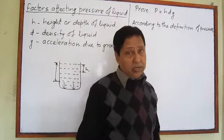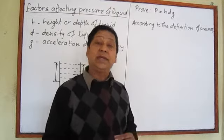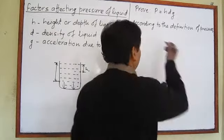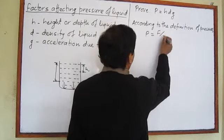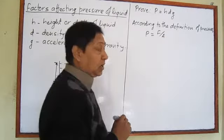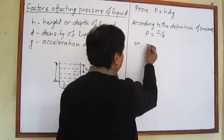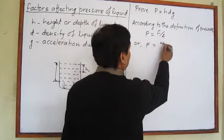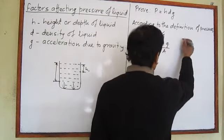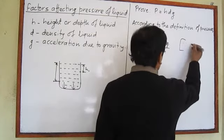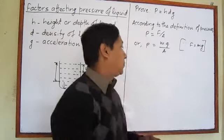According to the definition of pressure, force acting per unit area is called pressure. That's why pressure can be written as P = F/A. In place of force, we write mg, because force here is the weight force.